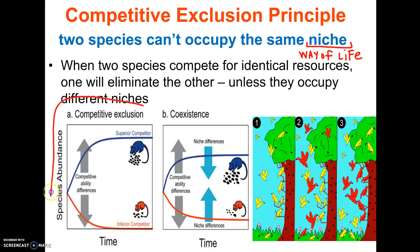And that's what they're showing here in this picture. You have two mice with the exact same niche. This one will die, this one will survive. Eventually there'll only be the blue mouse.